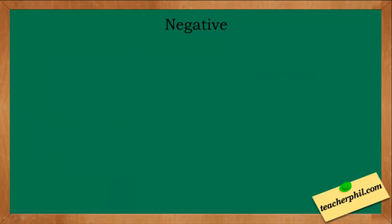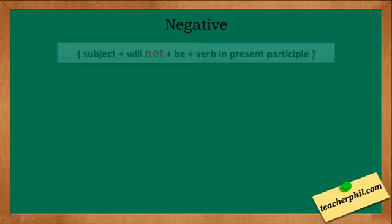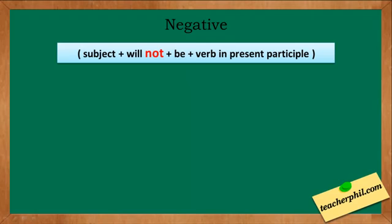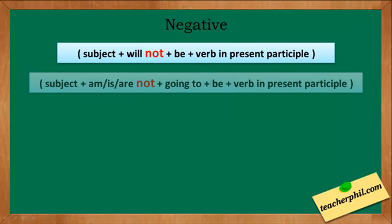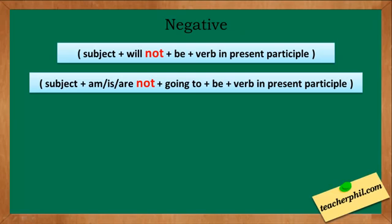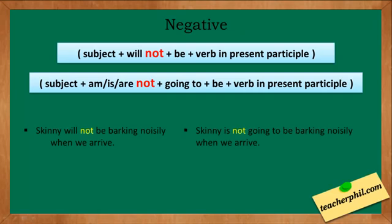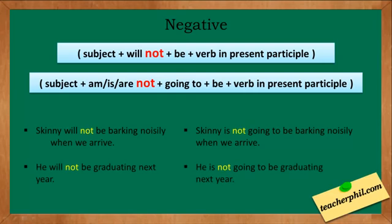For negative sentences, we follow these patterns: subject + will not + be + verb in present participle, and subject + am/is/are not + going to + be + verb in present participle. Examples: 'Skinny will not be barking noisily when we arrive.' 'Skinny is not going to be barking noisily when we arrive.' 'He will not be graduating next year.' 'He is not going to be graduating next year.'